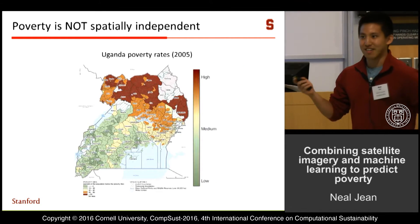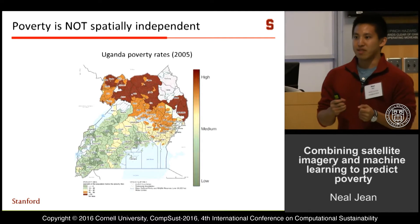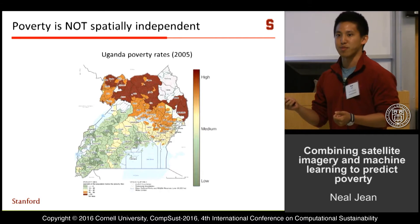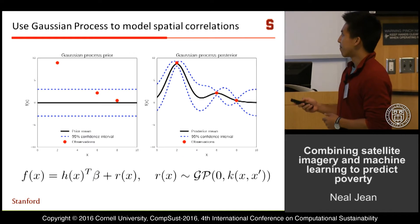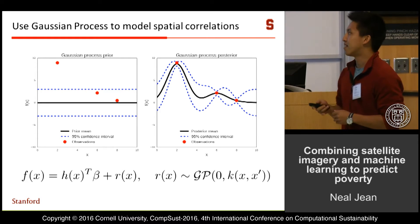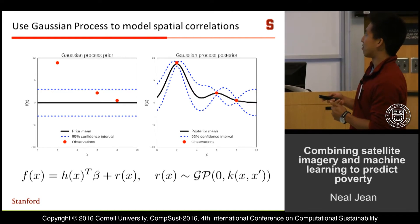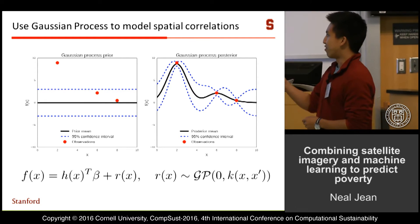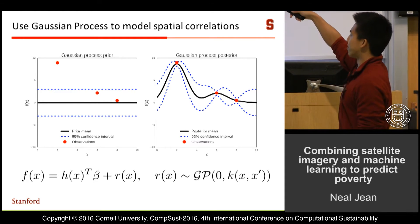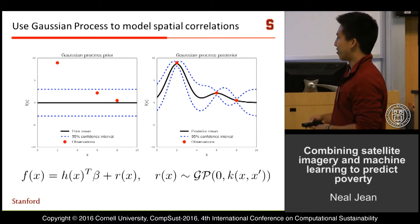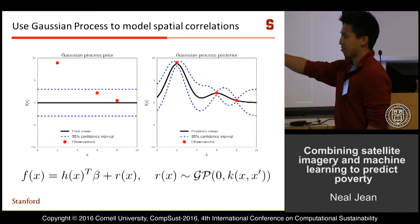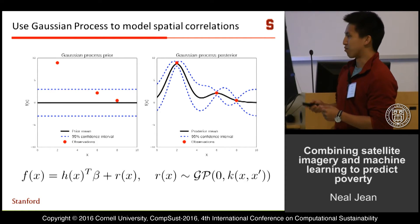Now I'm going to talk about some recent unpublished work. Before, we were making poverty predictions independently at every location, but as you can see from this map, wealth isn't distributed randomly — there's spatial structure. So how can we use that to build better models? What we propose is to put a Gaussian process on top of our CNN. A Gaussian process can model spatial correlations: with a prior of mean zero, after making observations, the posterior distribution is drawn toward those observations. The model has a linear term for image features and a Gaussian process that models spatial correlations and handles the residuals.